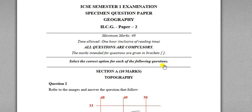Hi everyone, welcome to a new video. Here we are going to discuss the specimen question paper given by the council. The question paper will be for 40 marks — that means there will be 41 one-mark questions — and the total time inclusive of reading time is 40 minutes. We are still not sure whether it will be an online or offline exam, but what we have to concentrate on is the method of preparation. All questions are compulsory.